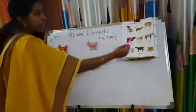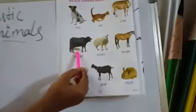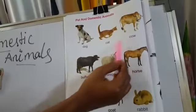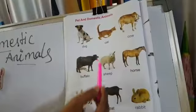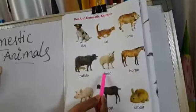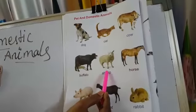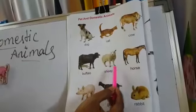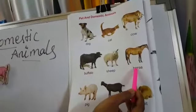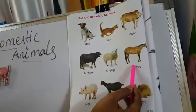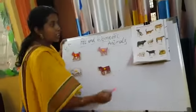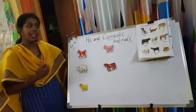Like cow and buffalo — they give us milk. We drink buffalo milk and cow milk. Sheep gives us wool. Horse carries us — we sit on the horse and we go. So these domestic animals help us.